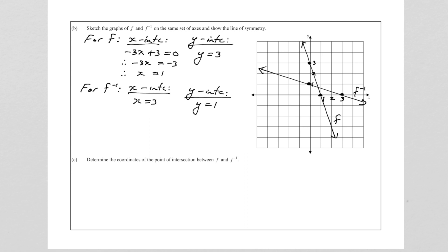They also ask us to show the line of symmetry. The line of symmetry is y = x, because we swap x and y with inverse. Finding the inverse is exactly the same as finding the reflection in the line y = x. That line goes through the origin, intersects where the two lines intersect, and that is our line of symmetry. We always draw it as a dotted line, and remember to put the equation y = x on this line — that is always the line of symmetry when we deal with inverse functions.